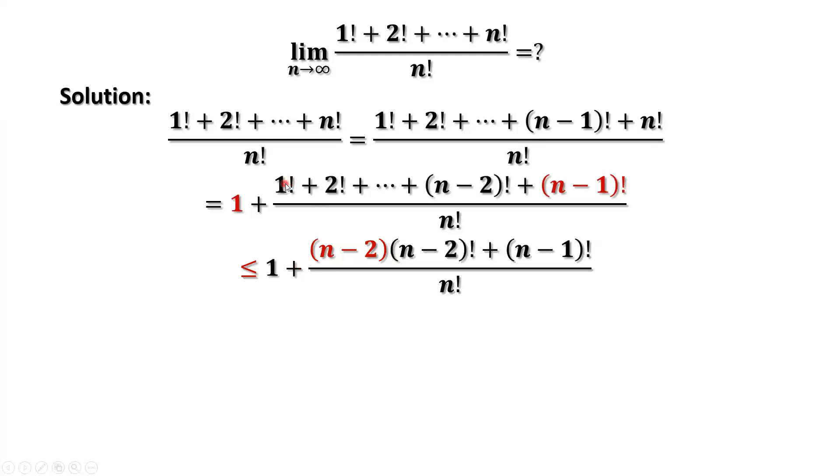How many terms including this term? n minus 2. Therefore, we have n minus 2 times n minus 2 factorial.